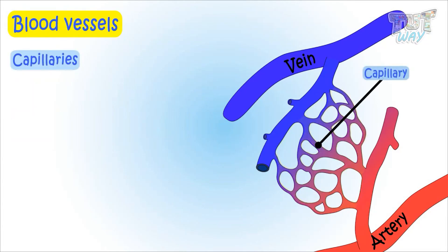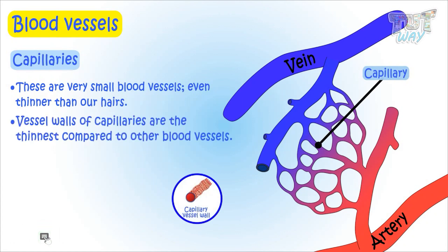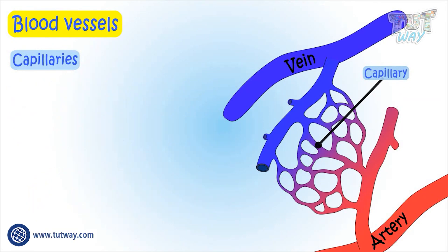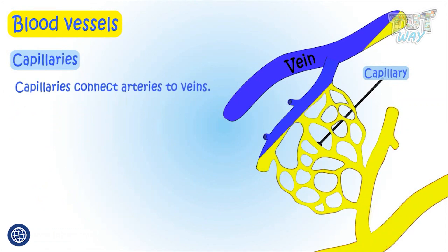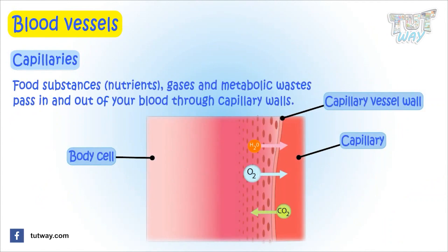Capillaries are very small blood vessels, even thinner than our hairs. The vessel walls of capillaries are the thinnest compared to other blood vessels. Capillaries connect arteries and veins, and food substances — that is, nutrients, gases like oxygen and carbon dioxide, and other metabolic wastes — all pass in and out of the blood through these capillary walls.